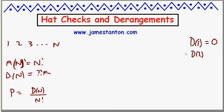D of 2. There's only one way to arrange two objects so none is back in its original position. That is to swap them.